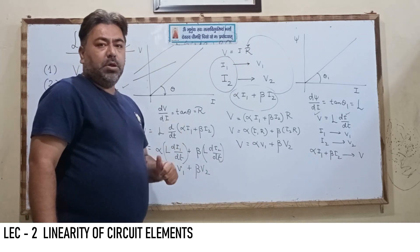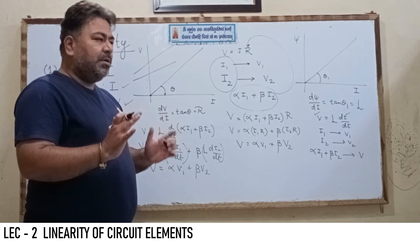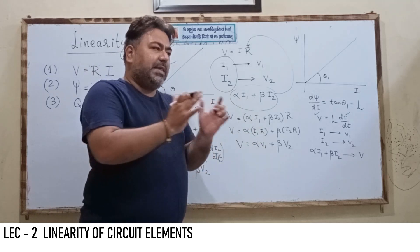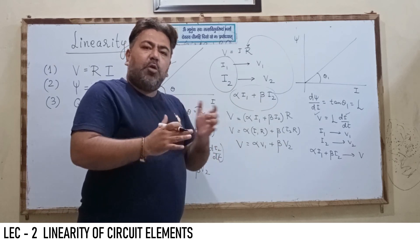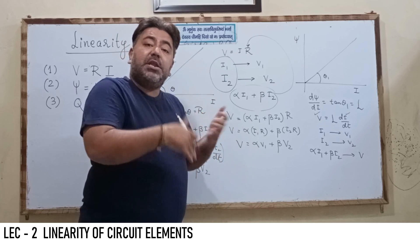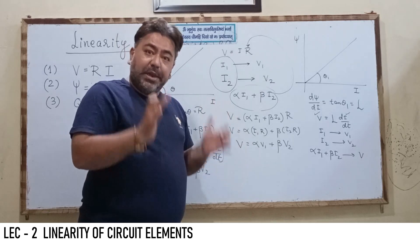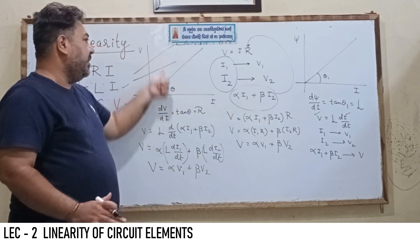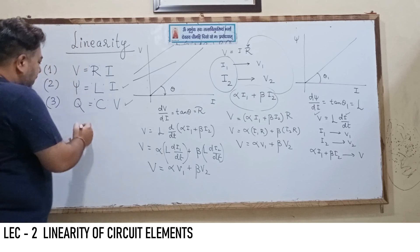Whenever this condition is satisfied — we give one excitation and get one response, give a second excitation and get a second response, and making a linear combination of excitations gives the same linear combination of responses — then the element is said to be linear. This proves linear inductance and linear resistance.